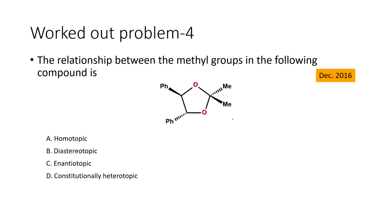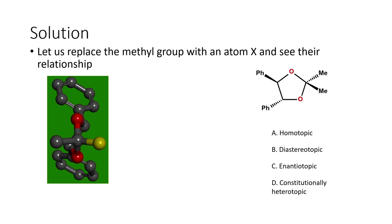In the next problem, we find the relationship between two methyl groups in a given compound — whether they are homotopic, diastereotopic, enantiotopic, or constitutionally heterotopic. To identify topicity, we replace one methyl group with a phantom atom, do the same for the second methyl group, and determine the relationship between the two resulting compounds.